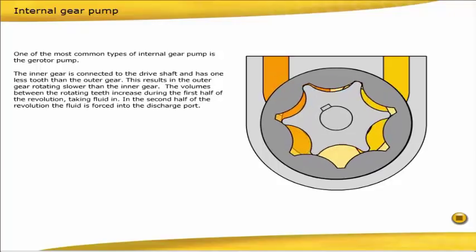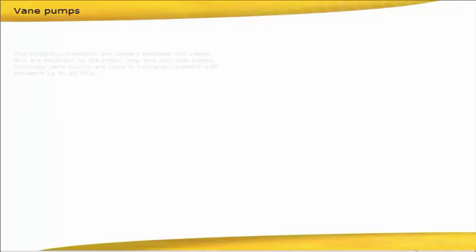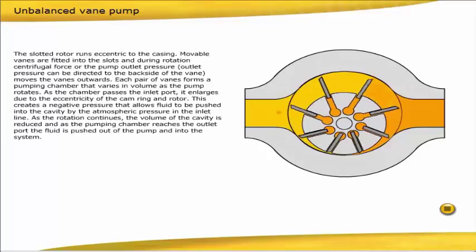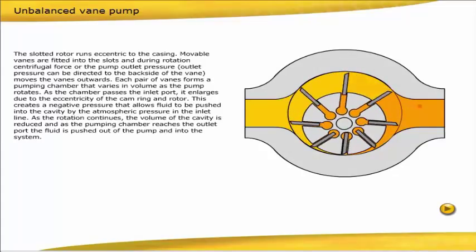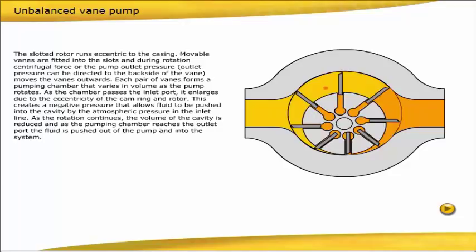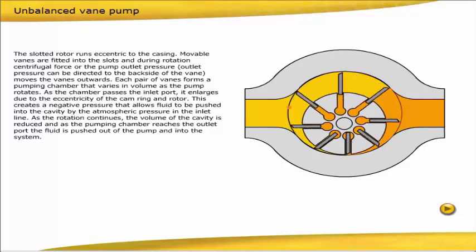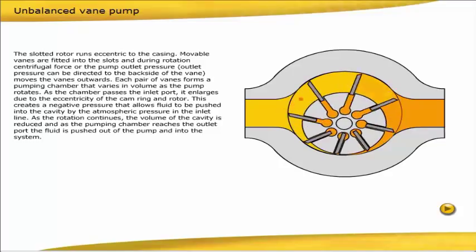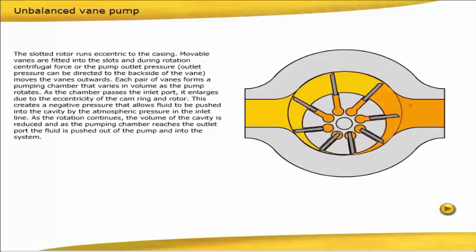The pumping chambers are formed between the vanes, and they're enclosed by the rotor, ring, and two side plates. Normally, vane pumps are used in hydraulic systems with pressure up to 20 MPa. The slotted rotor runs eccentric to the casing. Moveable vanes are fitted into the slots, and during rotation, centrifugal force, or the pump outlet pressure which can be directed to the backside of the vane, moves the vanes outwards. Each pair of vanes forms a pumping chamber that varies in volume as the pump rotates.